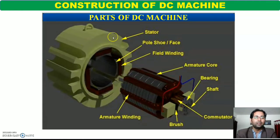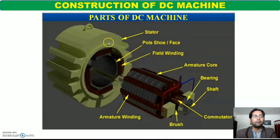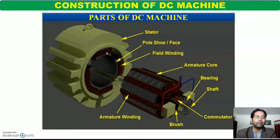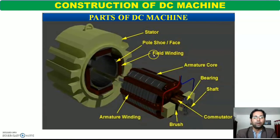इस stator के तीन important components हैं. पहला जिसको हम frame बोलते हैं, outer periphery — यानि magnetic frame या frame, magnetic circuit भी बोल सकते हैं. दूसरा important part है magnetic pole — यानि stator का जो pole होता है उसको magnetic pole बोलते हैं, pole core भी बोलते हैं, और यह pole shoe या pole face है. तीसरा important part is field winding — यानि stator के pole पर जो winding करते हैं उसको field winding के नाम से जानते हैं.